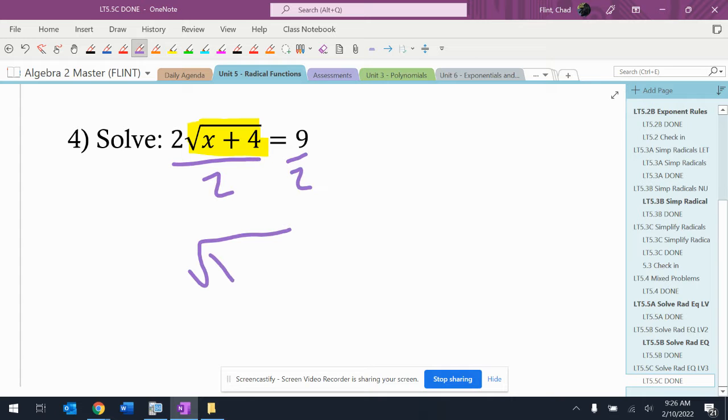So I'm going to get radical x plus 4 equals 4.5.